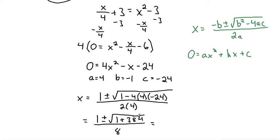Continuing to simplify, 1 plus 384 is 385, so that would be 1 plus or minus the square root of 385 over 8.